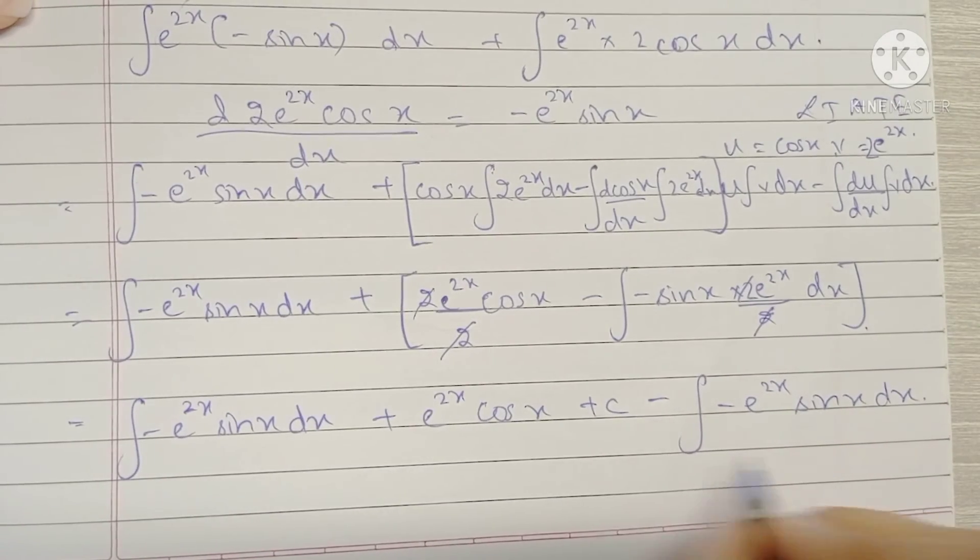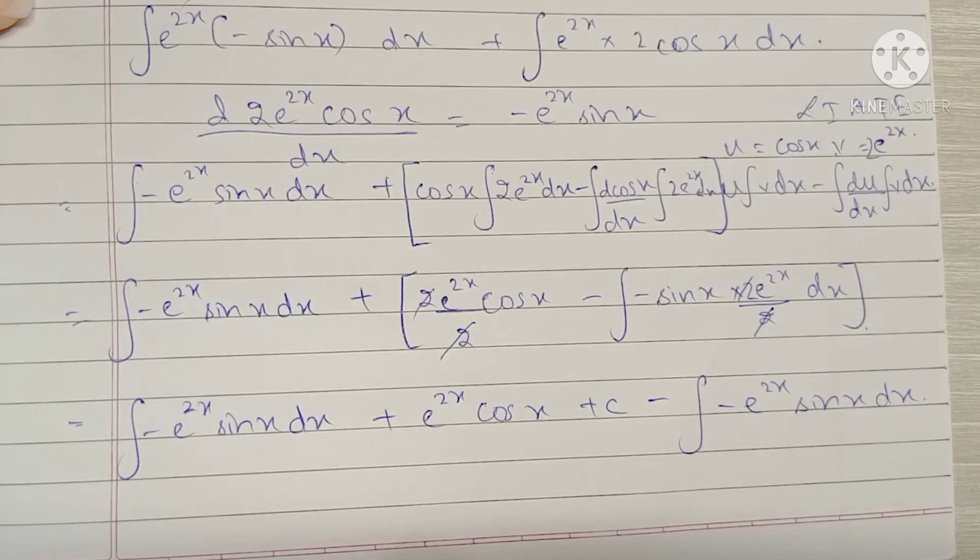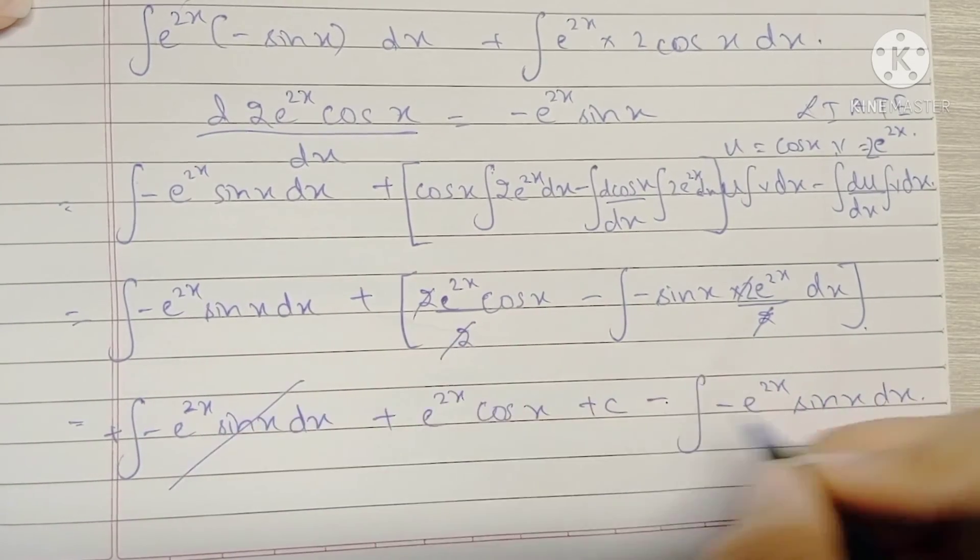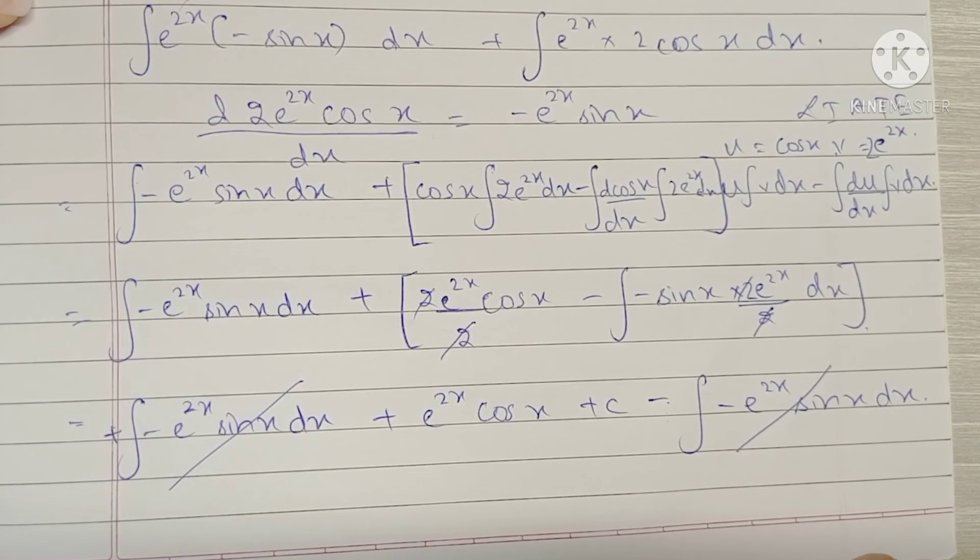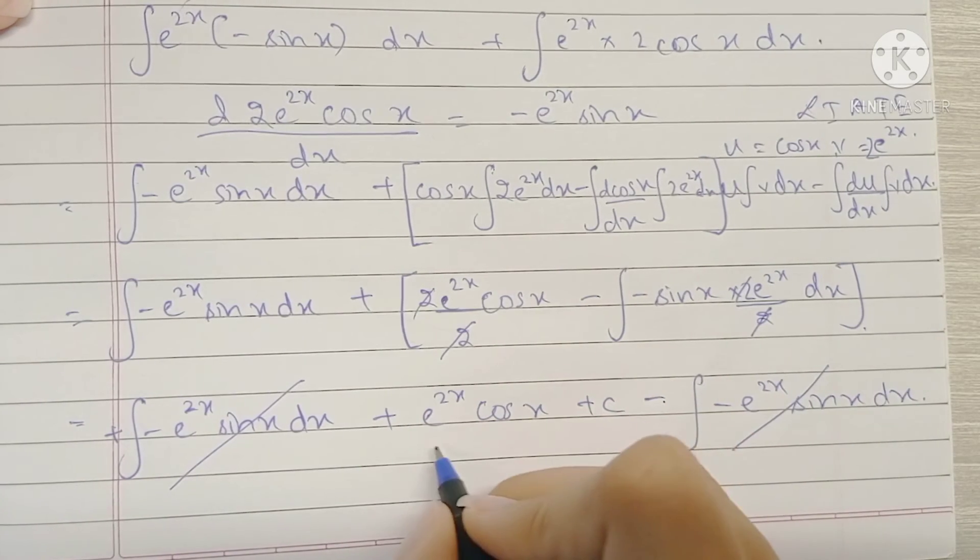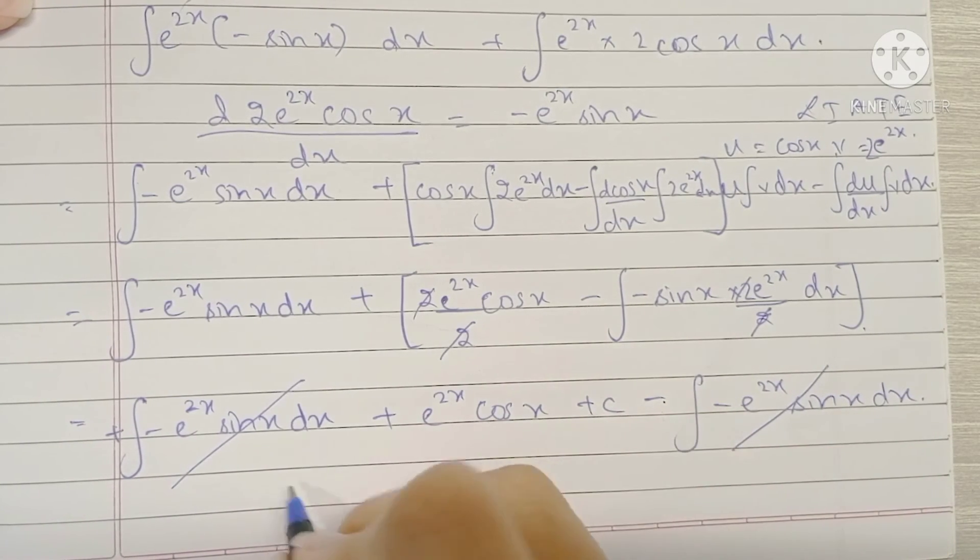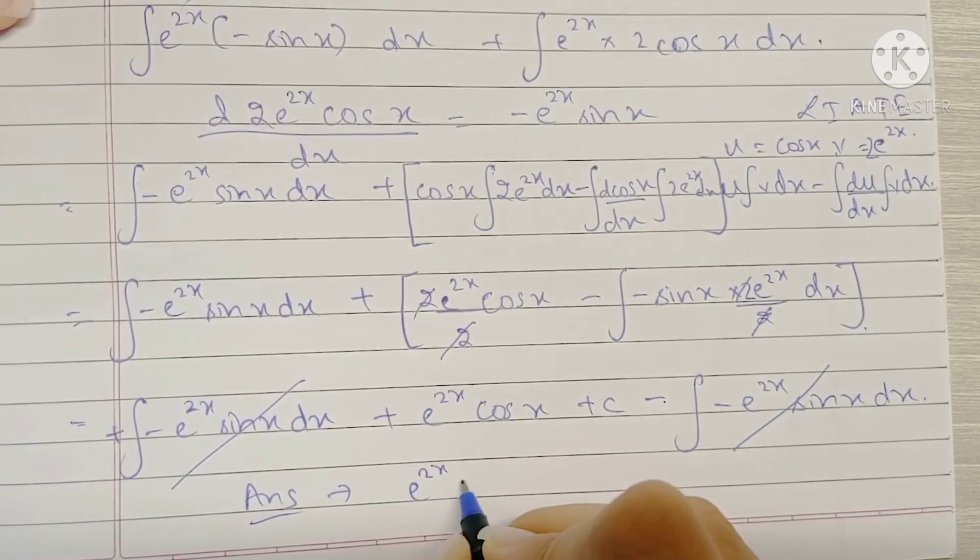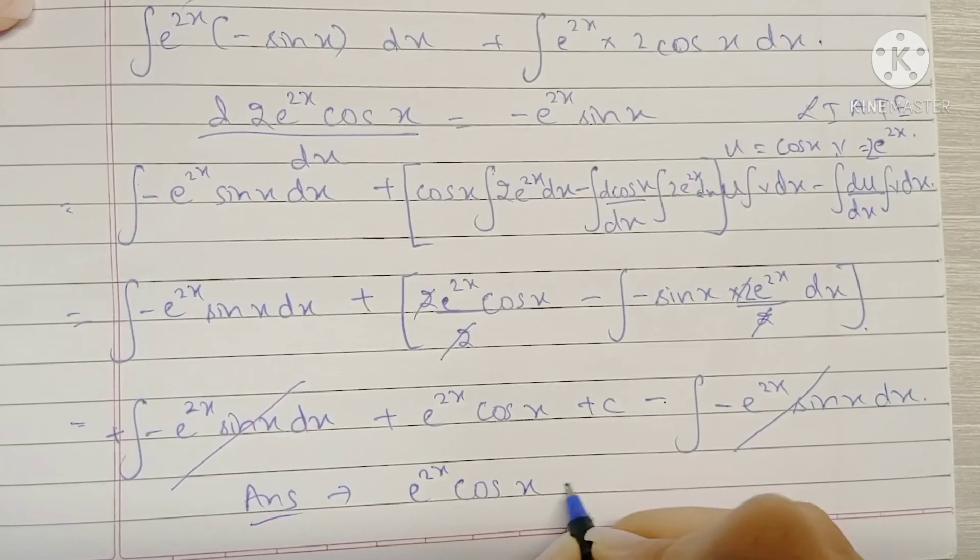So because these two integrals are exactly the same and we have a plus right here and a minus right here they get cancelled and since we are left with no other integral term this becomes our final answer. So our final answer is e raised to 2x cos x plus c.